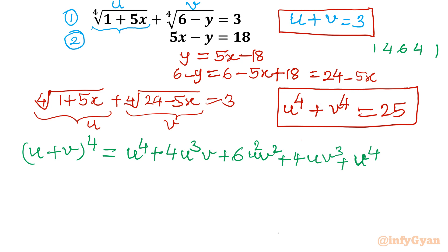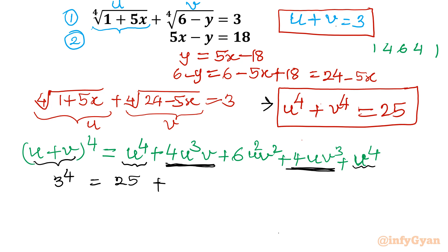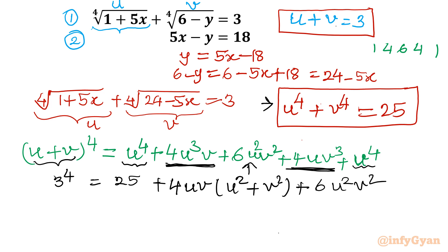Putting u plus v equals 3, we get 3 to the power 4. We know u⁴ plus v⁴ equals 25, so let me substitute. We get 3⁴ equals 25 plus, between 4u³v and 4uv³ I take 4uv common, giving 4uv times (u² + v²), plus 6u²v². Now 3⁴ is 81, and 81 minus 25 is 56.